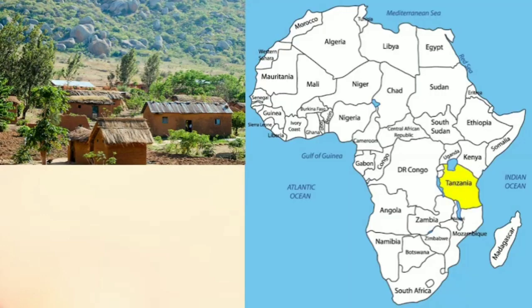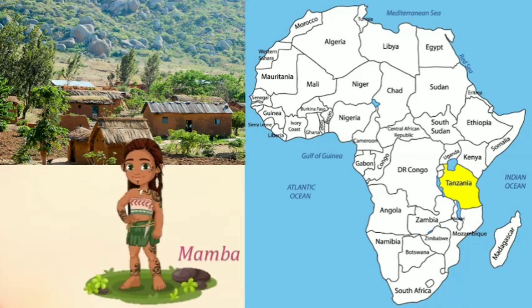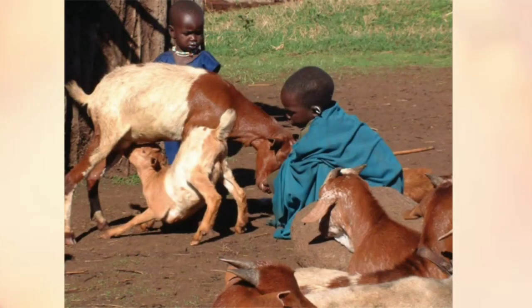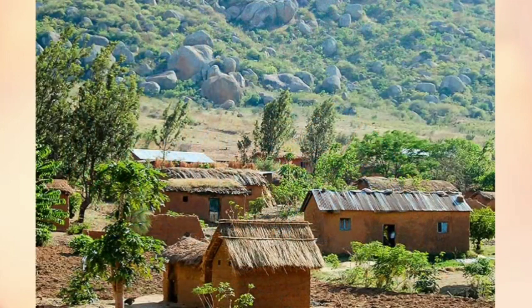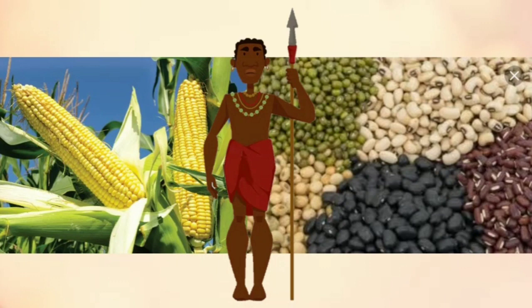In a small village in Tanzania in the continent of Africa, Mamba is a little girl who gets up very early in the morning to fetch water. She has to walk a long way and returns after a few hours. She then helps her mother in the house and joins her brothers in taking care of their goats. All her family owns is a piece of rocky land around their small hut. Mamba's father can barely grow some maize and beans on it after toiling very hard. It is not enough to feed the family for the whole year.